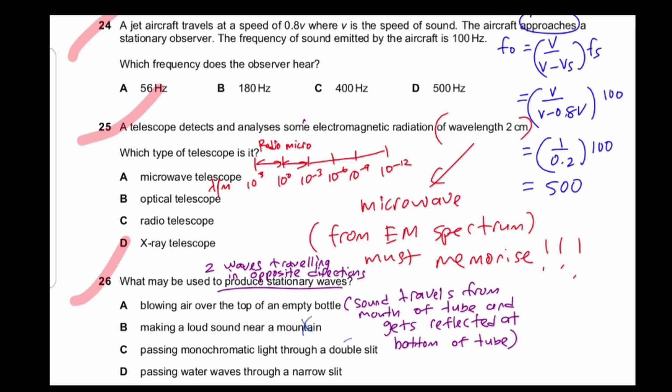And this double slit is actually interference, right? Not stationary waves in the sense that both the waves are actually coming out in the same direction. So they will overlap in the center rather than coming in the opposite directions.